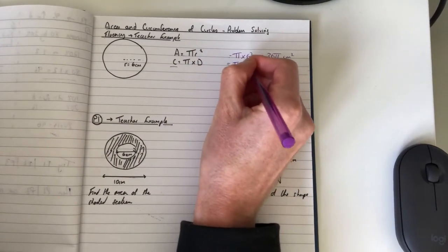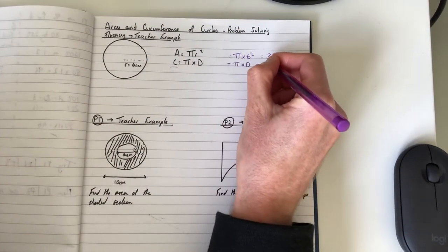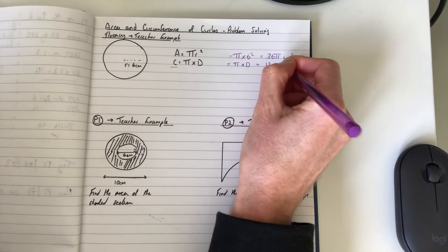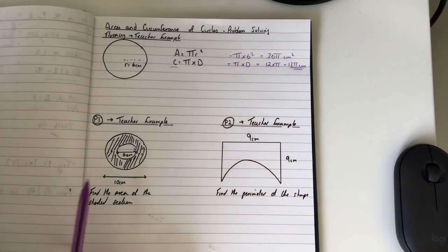To find the circumference, which could be called the perimeter, it's π times diameter. In this case the radius is 6 so the diameter is 12. So it's 12 times π which is 12π centimeters.